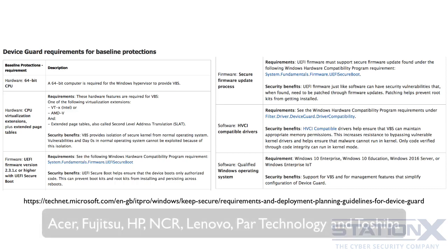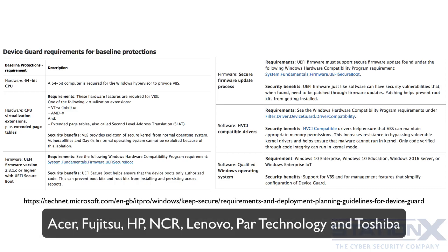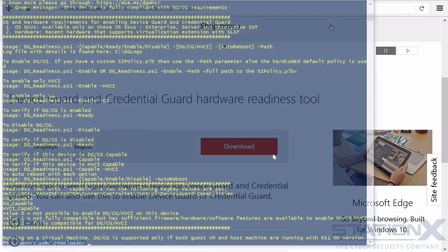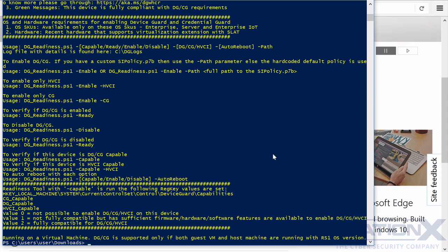Microsoft says the following computer makers have already signed on to support Device Guard: Acer, Fujitsu, HP, Lenovo, etc. But lighter laptops are unlikely to support these sort of hardware requirements, certainly in the short term, but maybe in the long term. If you want to find out whether the devices that you have can support Device Guard, then download the Device Guard and Credential Guard Hardware Readiness Tool, which is a PowerShell script you just run and it'll let you know what features you can support.